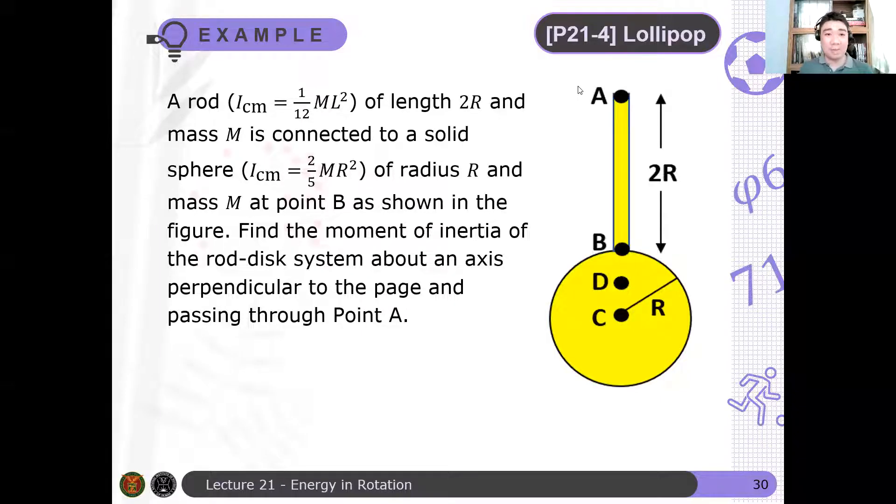This is the last problem for today, Lollipop. A rod of ICM is 1/12 ML² of length 2R and mass M is connected to a solid sphere of ICM which is 2/5 MR² of radius R and mass M at point B as shown.